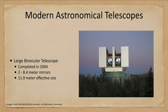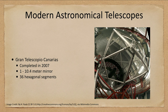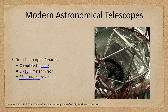We also have the Large Binocular Telescope — you might figure out why it gets its name. It's two telescopes together looking like a pair of binoculars looking out to space, with 8.4-meter mirrors. Since they're used together, it has the effective size of an 11.9 — almost a 12-meter — mirror, and was completed in 2004. Then there's the Gran Telescopio Canarias, completed in 2007, which is a single mirror of 10.4 meters. Since it's very hard to build one mirror this size, it uses 36 hexagonal segments put together to function as a single mirror.